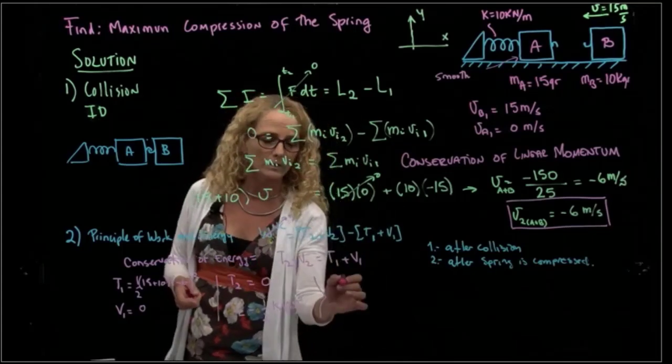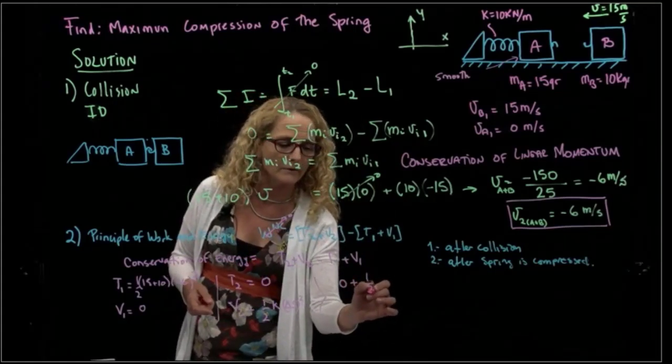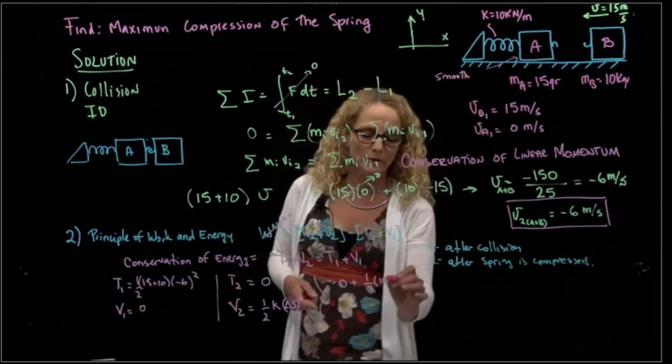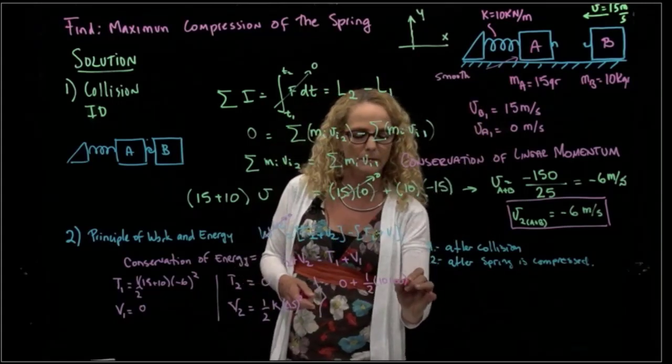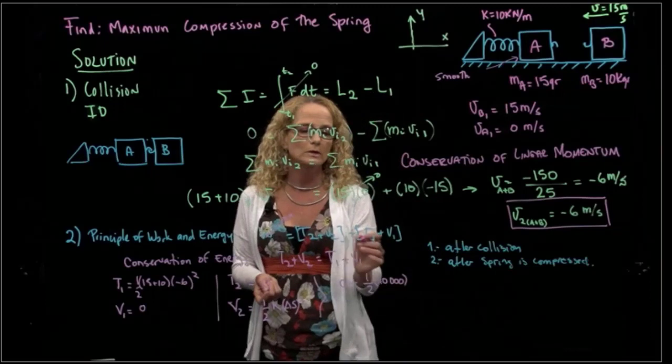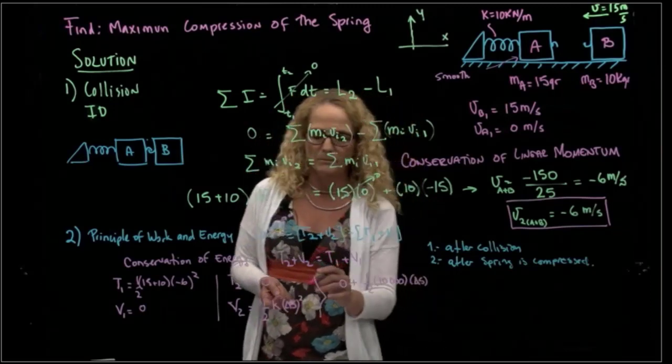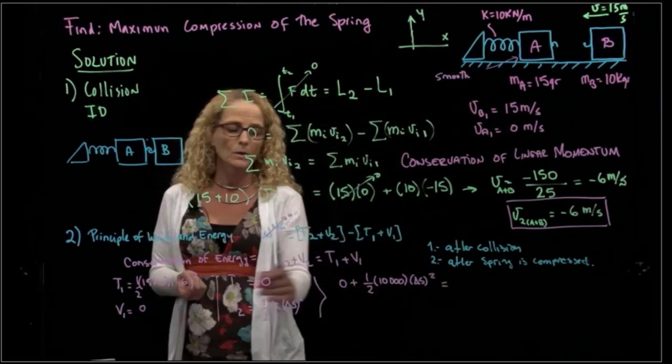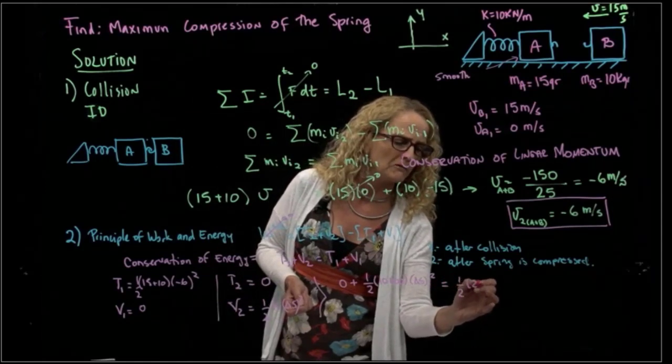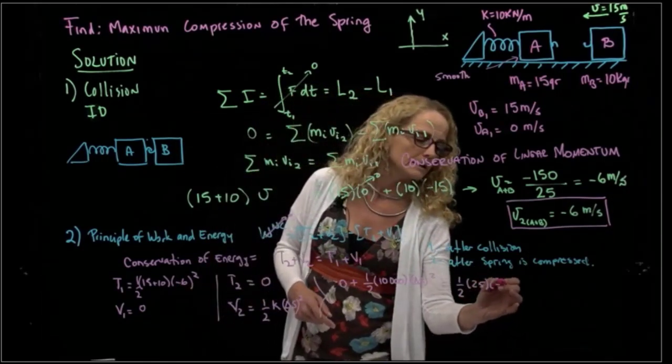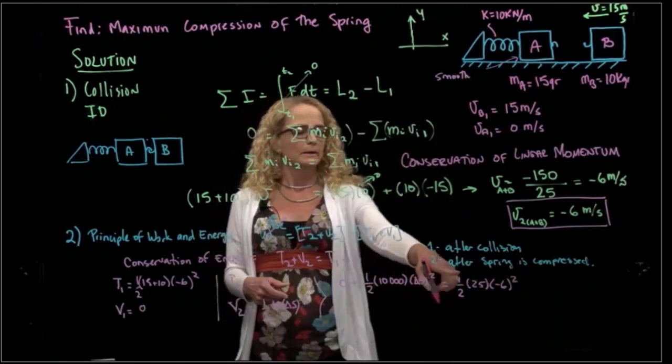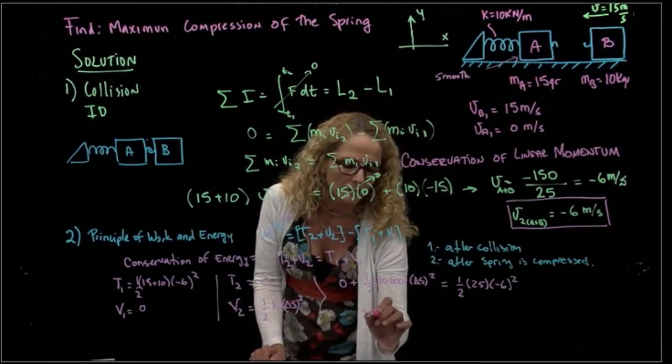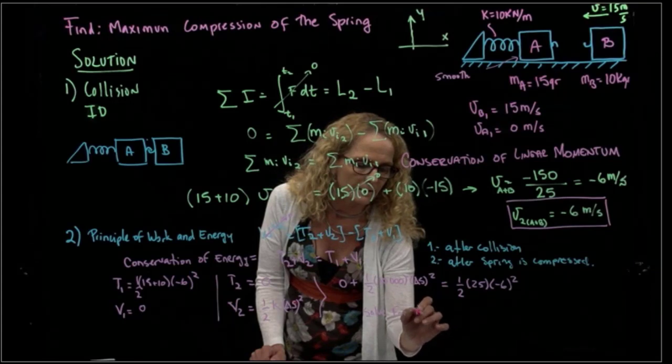So from here, we substitute our values, and then we have zero plus one half K equals 10 kilonewtons. So we have to put our kilo right there, because we want to be consistent with the units. Delta S is the maximum compression of the spring, equals T1 plus V1. And T1 will be one half of 25 negative 6 squared. Obviously, it doesn't matter the negative, because we will square that number, and then we can solve for delta S.